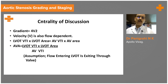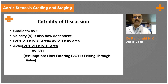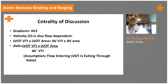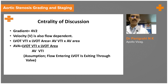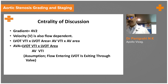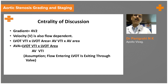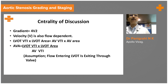From echocardiography, the most important determinant of aortic valve disease assessment is the velocity across the aortic valve. The gradient is calculated as four times V squared, where V is the velocity. Importantly, the velocity — and therefore V squared — is also dependent on the flow across the valve.